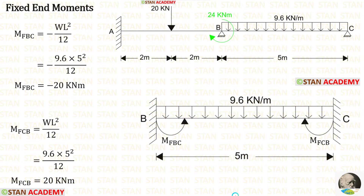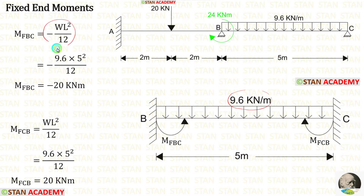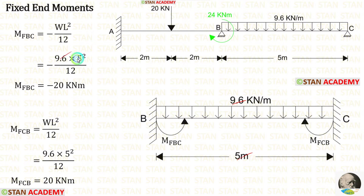Now let us find the fixed end moments in span BC. In span BC there is a uniformly distributed load of 9.6 kN per meter acting for the full span. The formulas to find the fixed end moments are −WL²/12 and +WL²/12. Here W is 9.6 and L is 5. Applying the values, we get M_BC and M_CB.